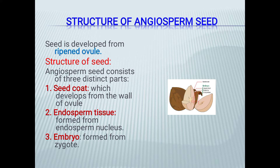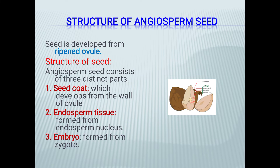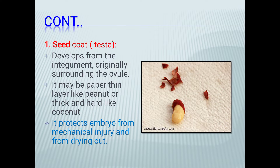As we know, seed is developed from the ripened ovule. The structure of angiosperm seed consists of three distinct parts: seed coat, endosperm tissue, and embryo. The seed coat develops from the wall of the ovule. Endosperm tissue is formed from the endosperm nucleus and is also called the store of nutrients. Embryo is formed from the zygote.